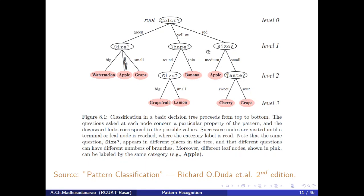We can observe that in this decision tree, a feature like size got repeated not just twice but three times — appearing at multiple levels. Size appears at level one and again at level two.